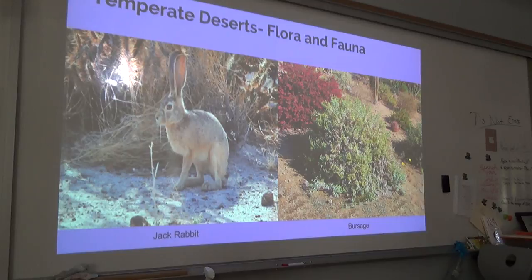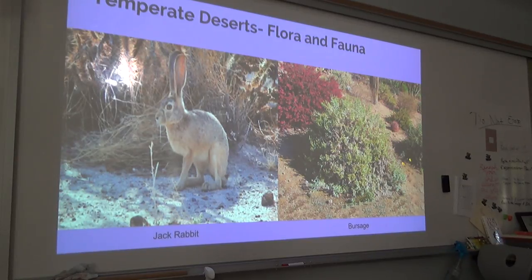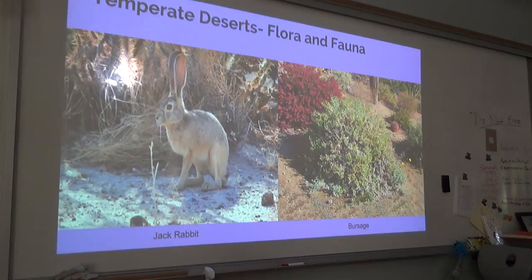For fauna, animals need to be accustomed to varying temperatures. Animals found in the temperate desert include kangaroo rats, snakes, lizards, and jackrabbits. Many of these animals burrow to escape the varying temperatures and because there's not a lot above ground to use for habitat.